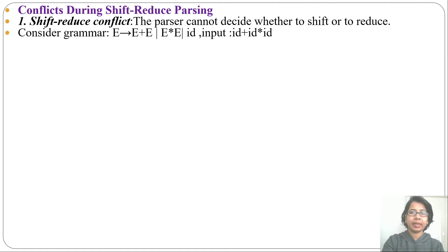Here the grammar is: E derives E plus E, E multiplication E, or id. The input string I am considering is id plus id multiplication id.